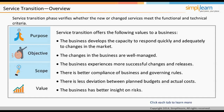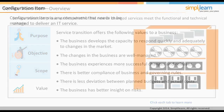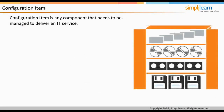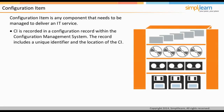A configuration item is any component that needs to be managed to deliver an IT service. Information about each CI is recorded in a configuration record within the configuration management system. The record is maintained throughout its lifecycle by configuration management and should include a unique identifier and the location of the CI.